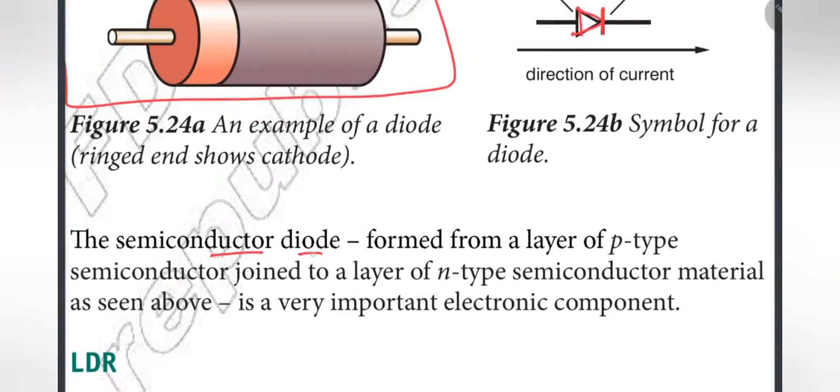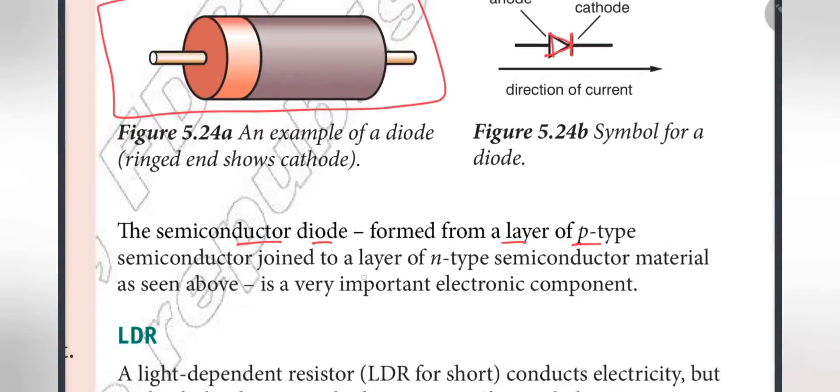The semiconductor diode is formed from a layer of P-type semiconductor joined to a layer of N-type semiconductor material, as seen above, is a very important electronic component. The P-N is the semiconductor diode, which is the electronic component.